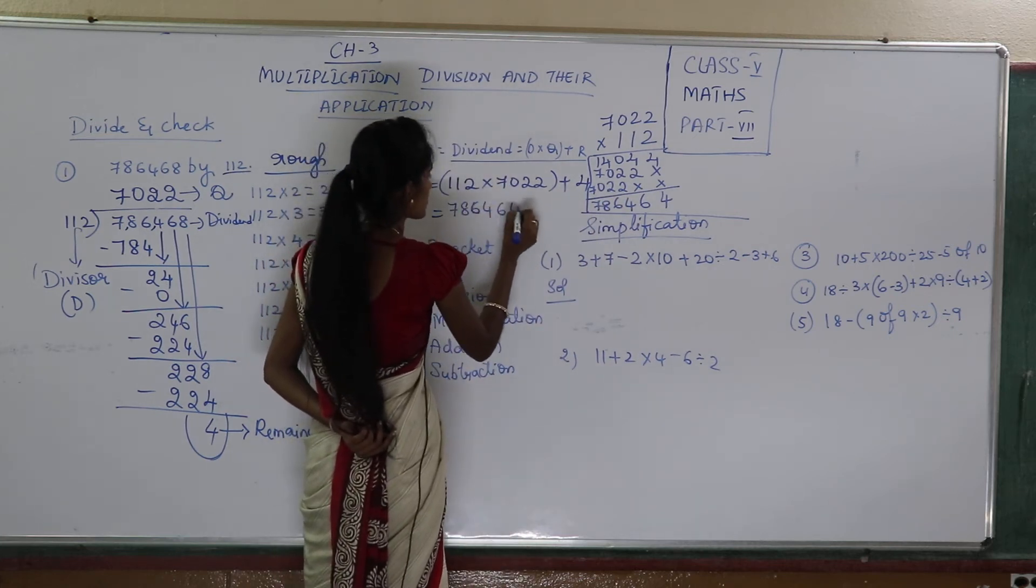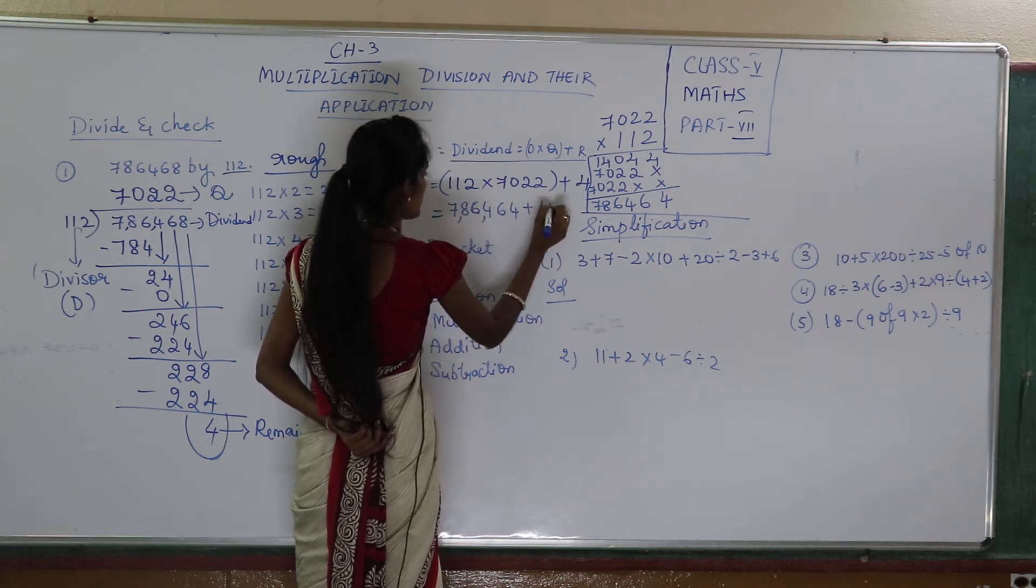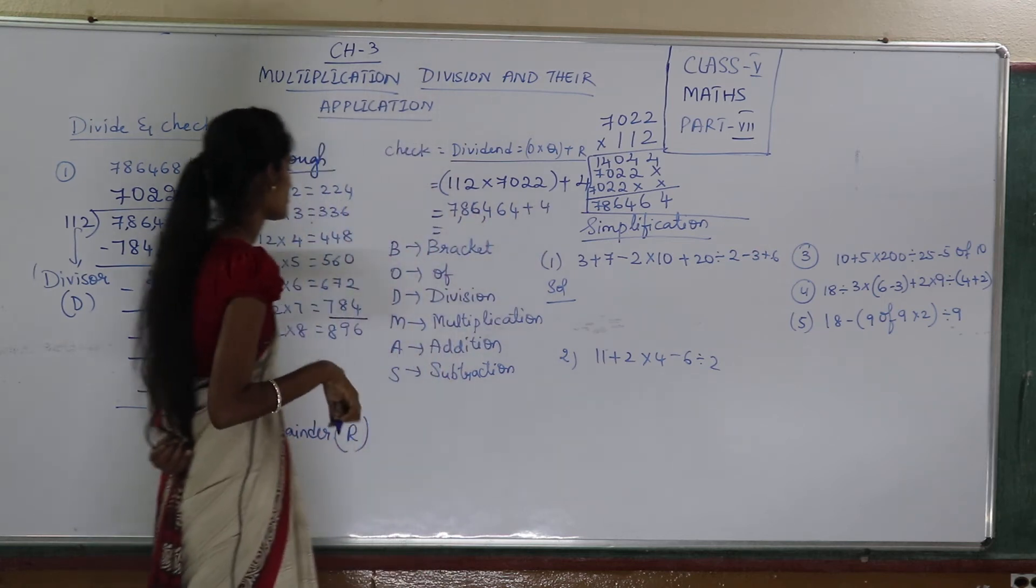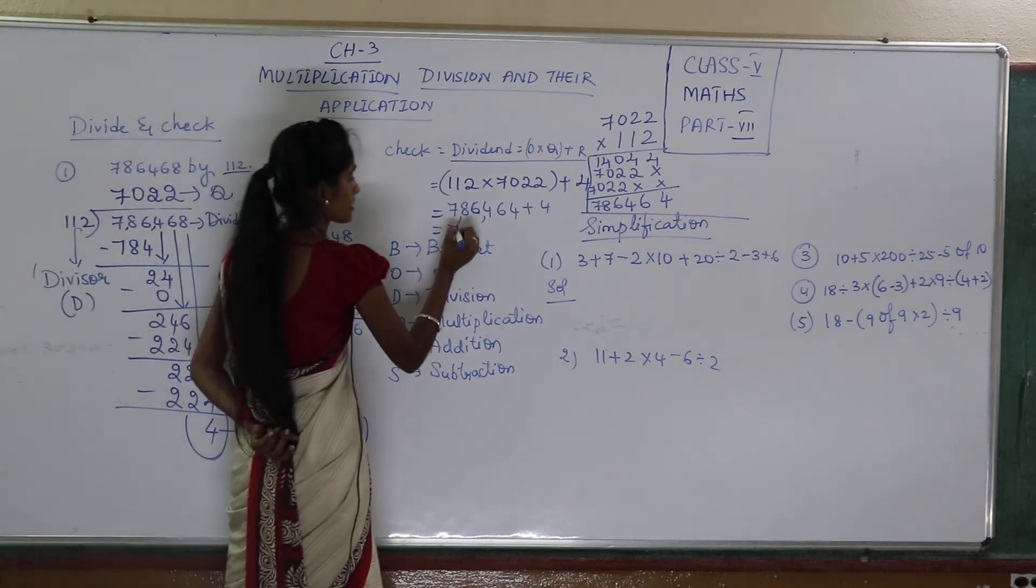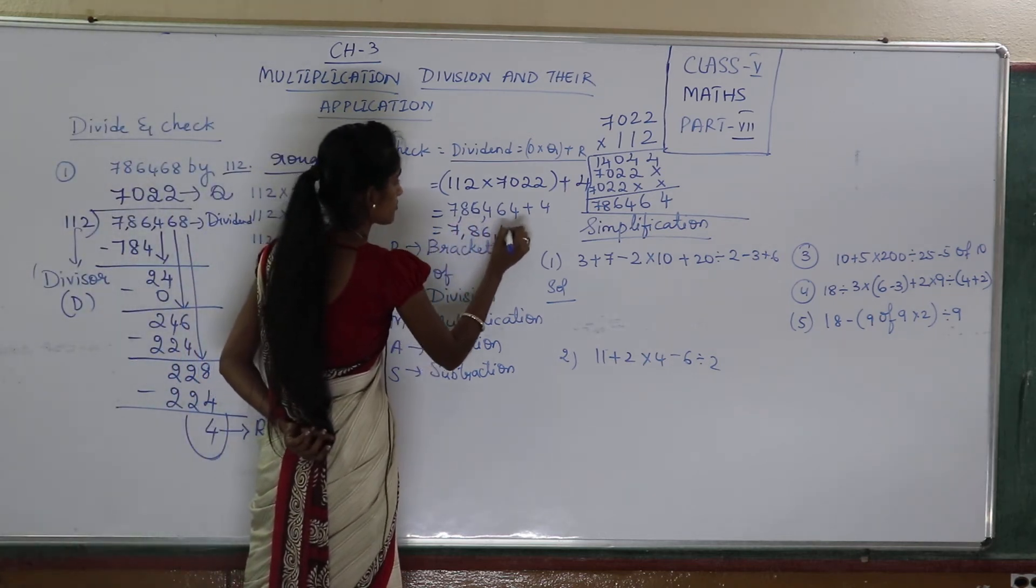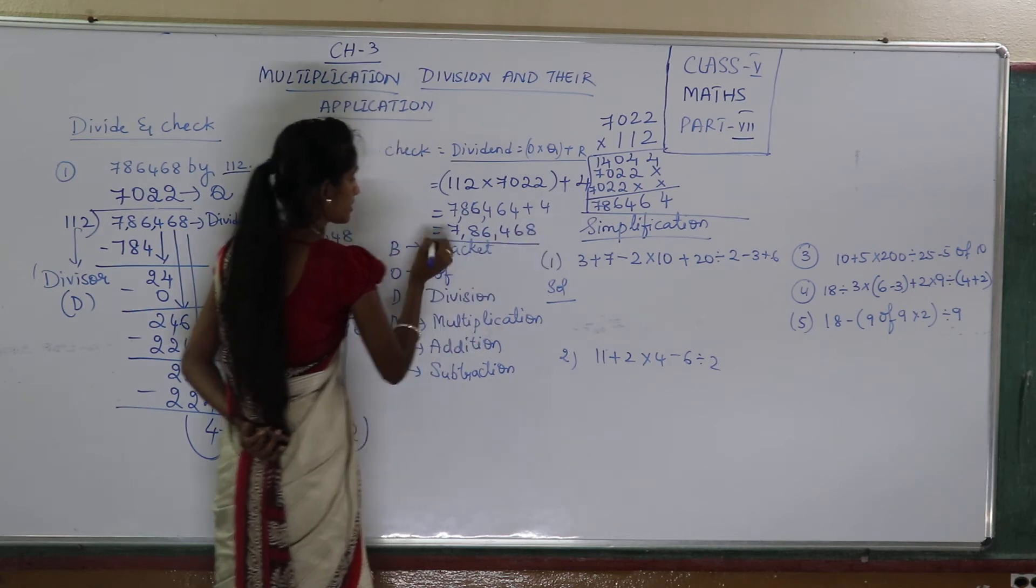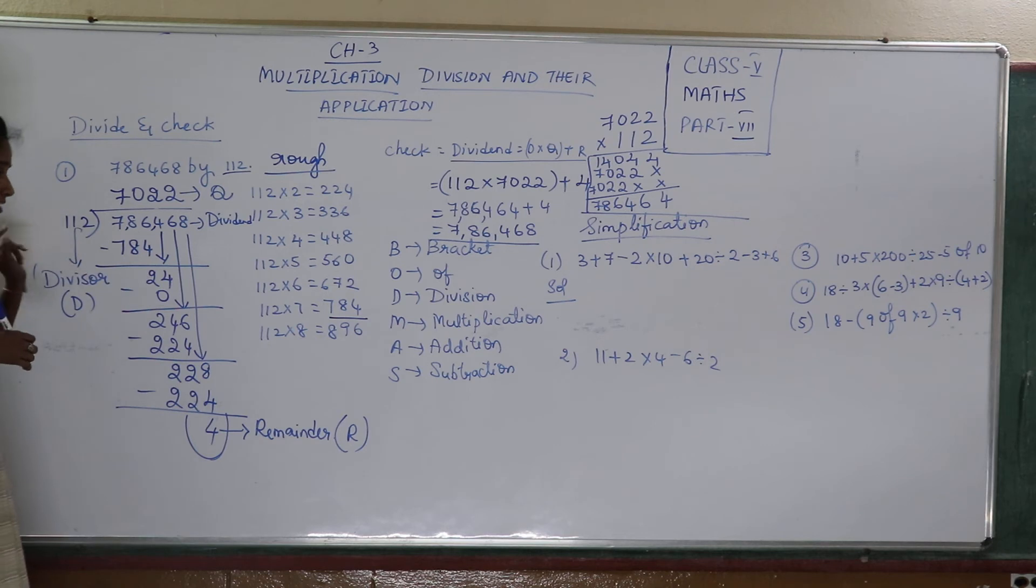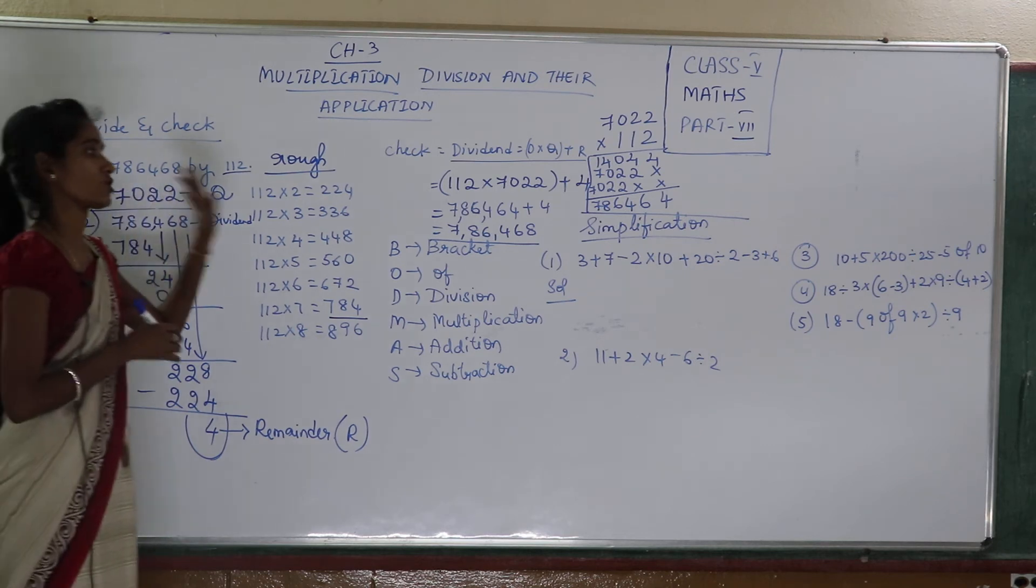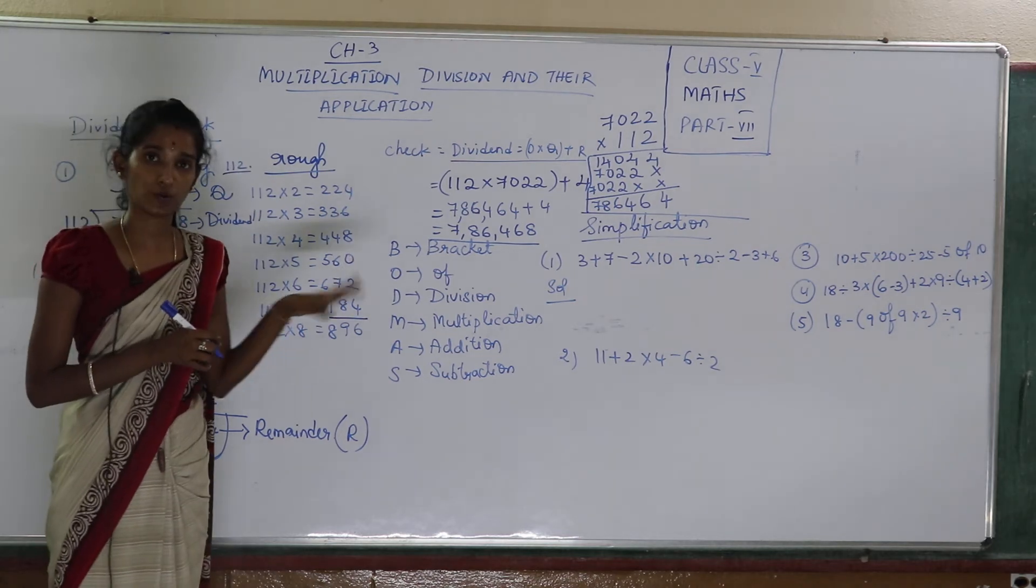6, 4, 6, 4, 7 and 86, 463, 4. Now for that I should add 4. So 7 and 86, 468. And you got this dividend? Yes, I got my dividend. So this is how we do the division as well as the checking work which is very very important.